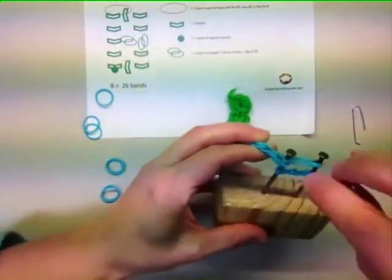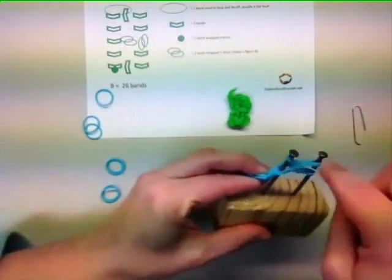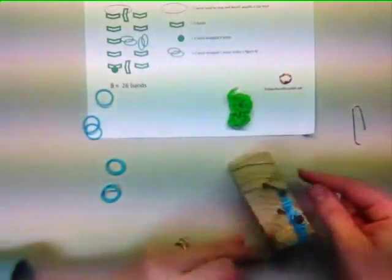Using your hook, go through the bands, grab the bottom two bands and pull them back through the bands and up and over the nails.